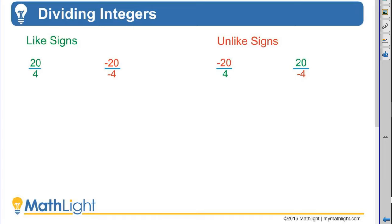Like signs: a positive divided by a positive, or a negative divided by a negative. Remember, in both cases, the quotient will be positive.